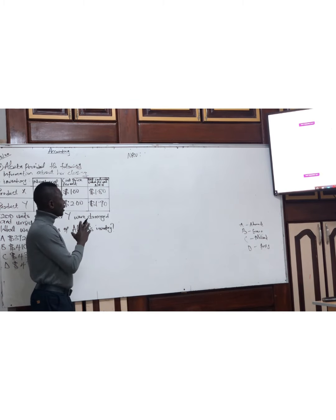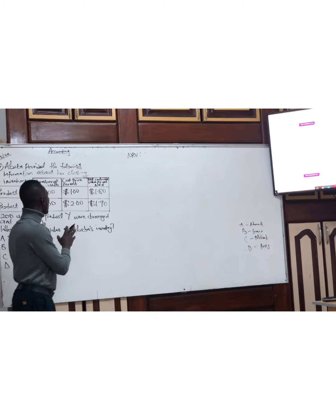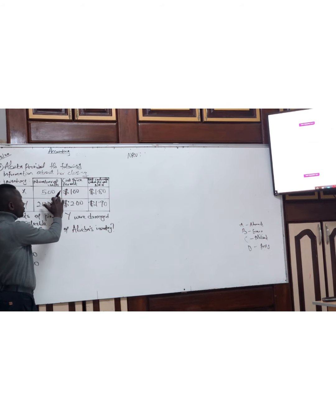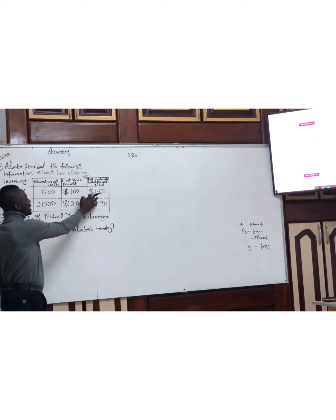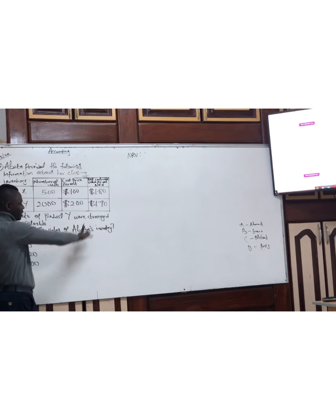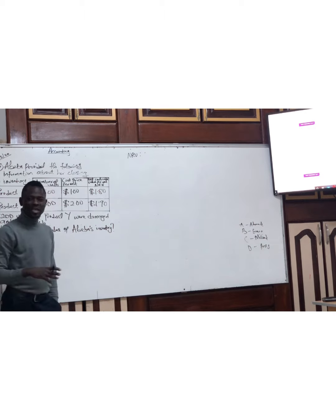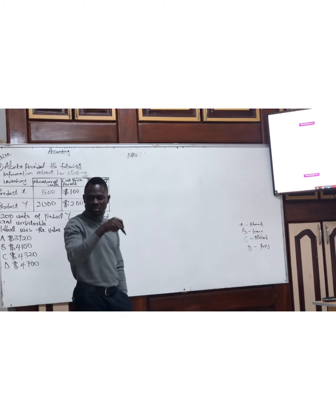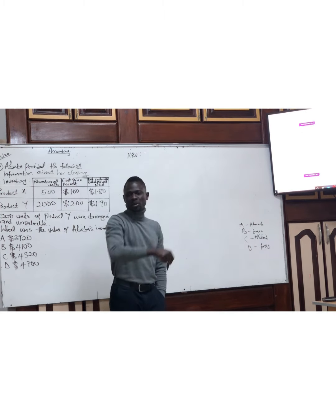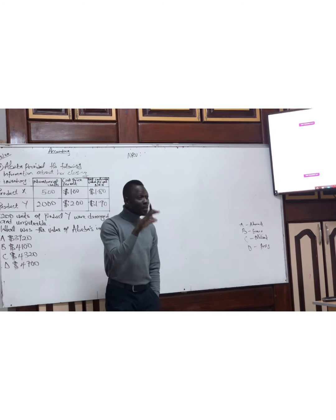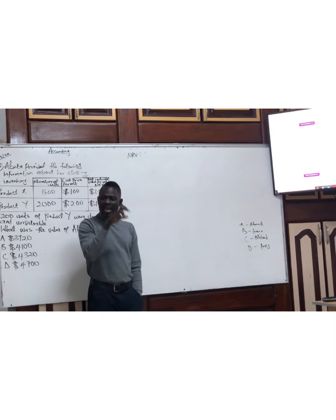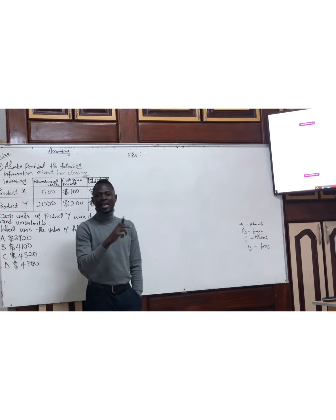So what are we talking about? Here we have the number of units, the quantity, we have the cost, and we have the Net Realizable Value, which I call NLV. For the cost, let's talk about the NLV. When we talk about NLV, it means the estimated receipt on the sales of a product minus the cost of sales — the amount you are going to sell a product less your cost on sales. That is what we call the NLV.